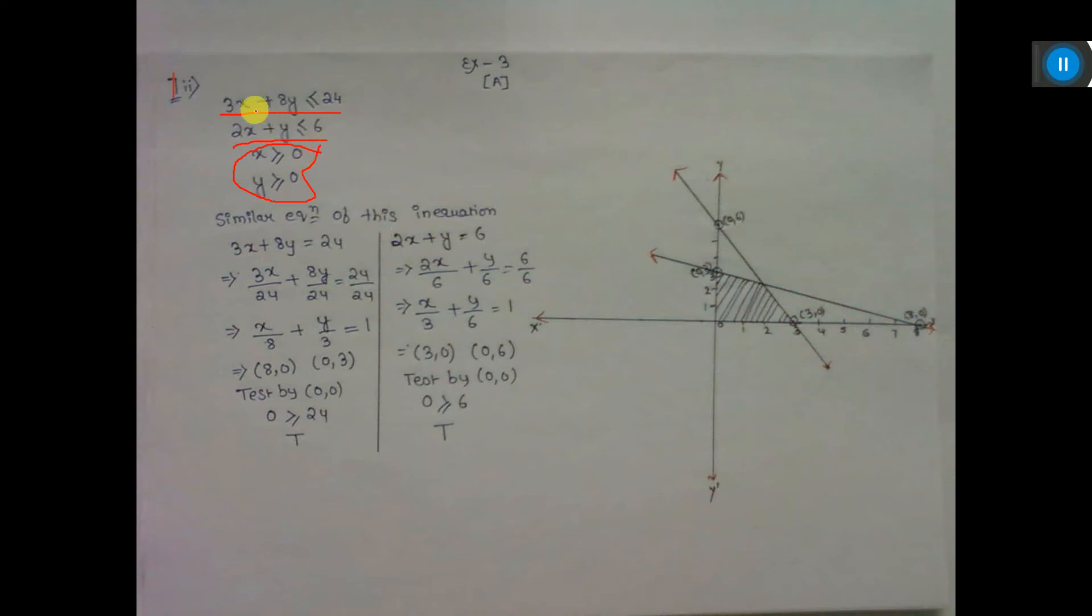These two inequations given, in place of the inequation sign, you give equation sign, here also give equation sign. Now, to bring right side to 1, we have to divide this equation by 24 and this equation by 6.